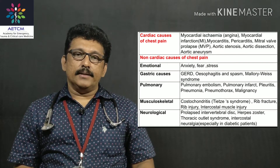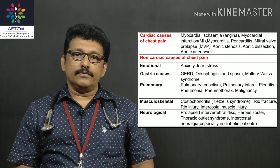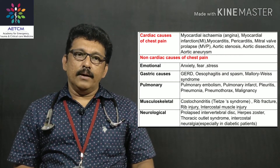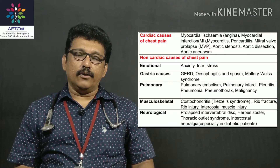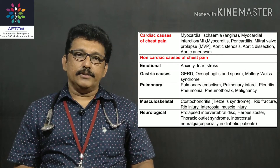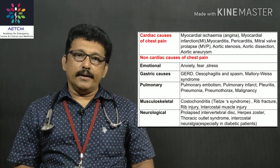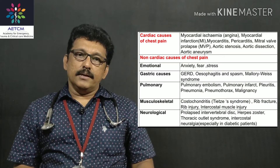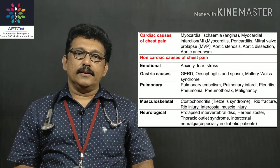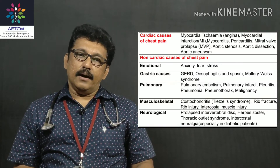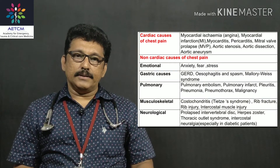Cardiac causes can be myocardial ischemia — that is angina — where you get pain on the left side of the chest that may radiate to the left arm. Myocardial infarction, or acute occlusion of one of the coronaries, can cause severe chest pain. Then myocarditis, pericarditis, mitral valve prolapse, aortic stenosis, aortic dissection, and aortic aneurysm can all produce pain in the heart.